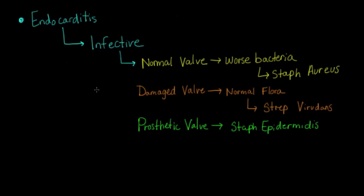Staph epidermidis likes to form little layers on prosthetic valves that allow them to survive and cause endocarditis. In addition, the worst bacteria usually cause what we call acute bacterial endocarditis, while the less virulent bacteria usually cause subacute bacterial endocarditis. You should remember that infective endocarditis can be caused by bacteria, viruses, and — a bit more rare but possible — fungi.